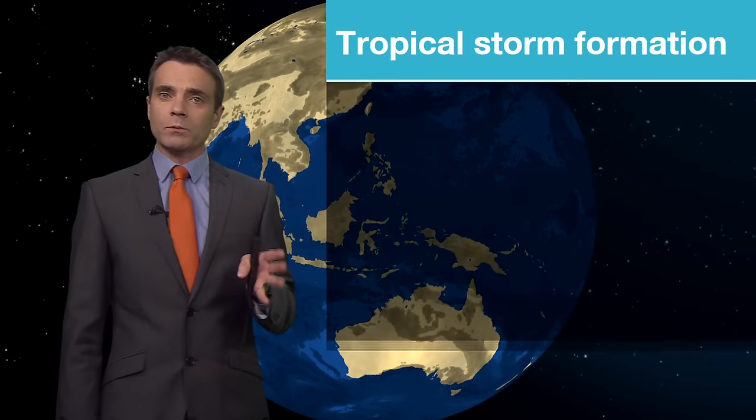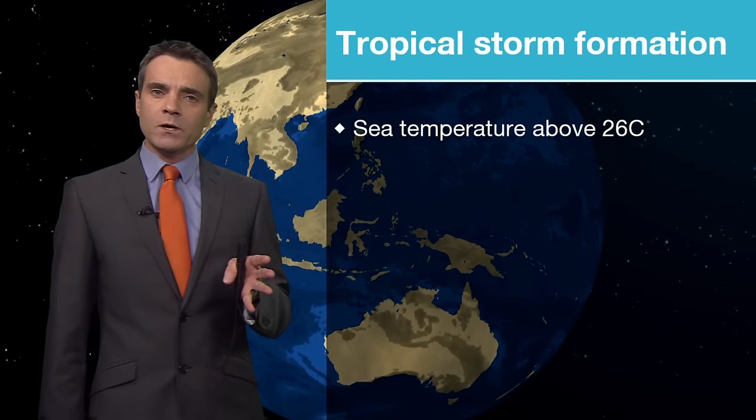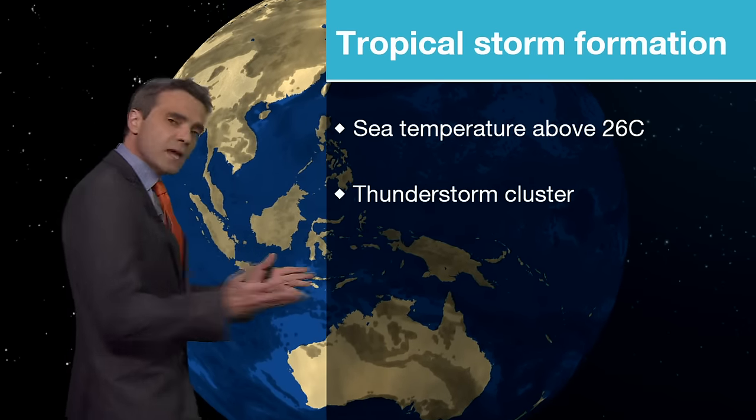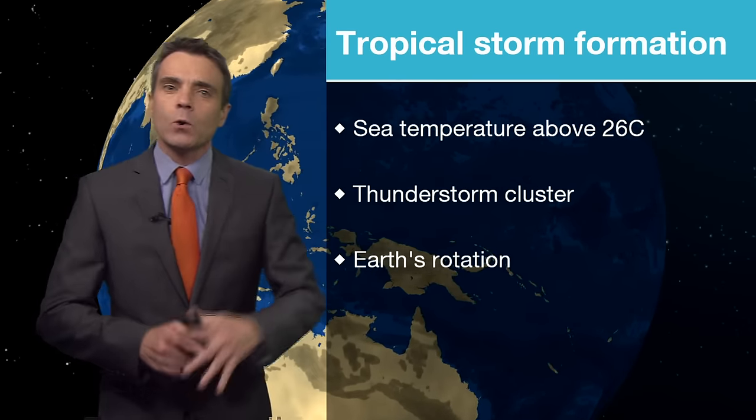There's no doubt that tropical storms provide some of nature's most impressive natural phenomena, especially destructive when they intensify to the state of being typhoons or hurricanes. But there are certain key ingredients required for the formation of tropical storms, primary of which is sea surface temperatures of at least 26 Celsius.